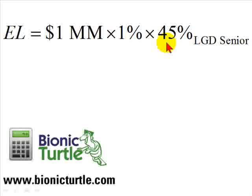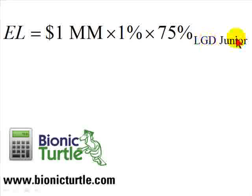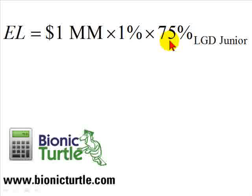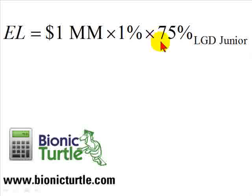Now let's go down the totem pole, so to speak, and instead consider a subordinated or junior claim that is also unsecured under the Basel rules. The loss given default would be 75 percent, and now we only assume a 25 percent recovery, and the expected loss jumps up to $7,500.